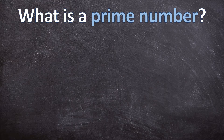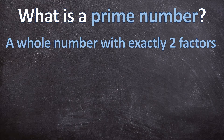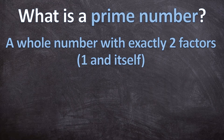What is a prime number? A prime number is a whole number with exactly two factors: one and itself. Let's look at this example.